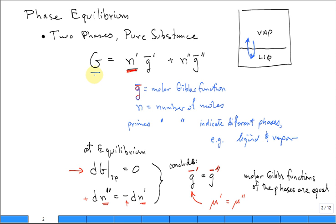So we have the Gibbs function. It's made up of how much is in each phase. They use prime and double prime notation—maybe vapor is double prime and liquid is single prime—to indicate the different phases. So the amount in that phase times the molar Gibbs function, plus the amount in the other phase times its molar Gibbs function, gives the total Gibbs function for a pure substance having two phases.